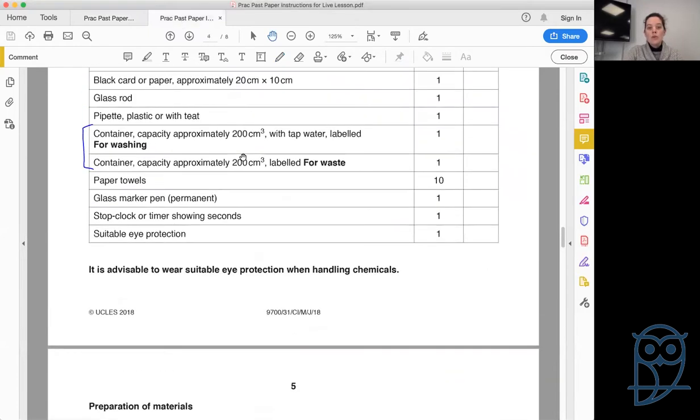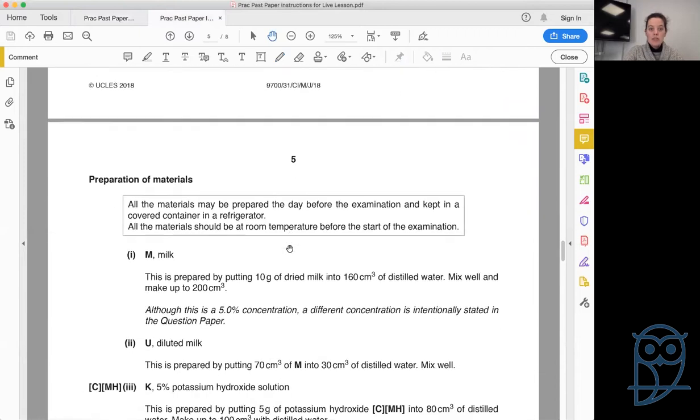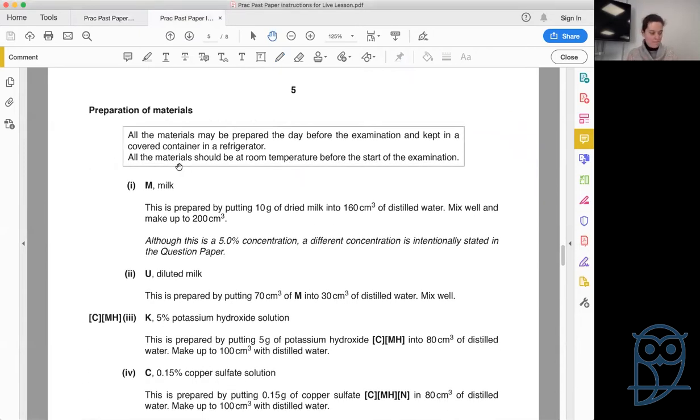After all of your equipment, comes the instructions for preparation of materials. It tells us how M was prepared. M is our milk—it's 10 grams of dried milk in 160 centimeters cubed of distilled water, mixing well and making up to 200 centimeters cubed. So we have 10 grams in 200 centimeters cubed. But there's the catch. Remember in the paper they said that M is 1%. Actually, this is 5%. But they tell your examiners not to fear. This is a 5% concentration. A different concentration is intentionally stated in the question paper.